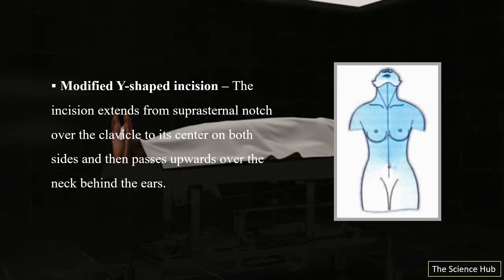The modified Y-shaped incision: the incision extends from the suprasternal notch over the clavicle to its center on both sides, and then passes upwards over the neck behind the ears — as you can see in the image.